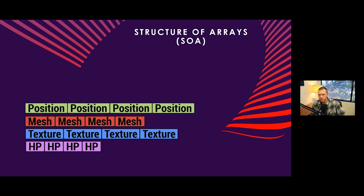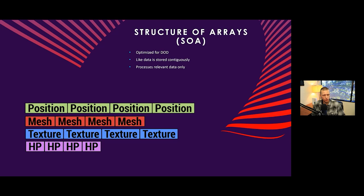To contrast that, we have Structure of Arrays — SOA. This is more optimized for data-oriented design, where data is stored contiguously and we can process relevant data only. This comes back to the point that unneeded data is not even processed. For example, when looking at rendering, we basically just need a position, a mesh, and a texture for a simple render — so we can grab just these first three arrays.